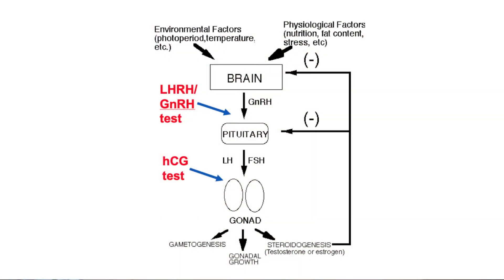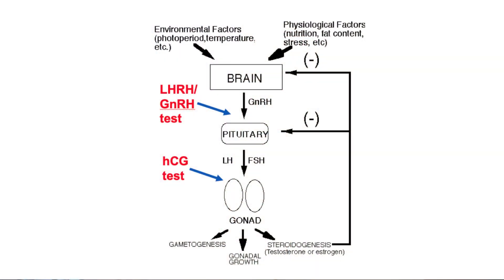This diagram shows, in a slightly simplified fashion, the level at which testing can occur. The LH-RH test or GnRH test tests the central functioning of the hypothalamo-pituitary axis, and the HCG test — used in boys — tests the ability of the testicles to respond to these hormones and produce testosterone. Failure to go through puberty can be due to either a central drive issue, so-called hypogonadotropic hypogonadism, or it can be due to problems in the gonads themselves, so-called primary hypogonadism.